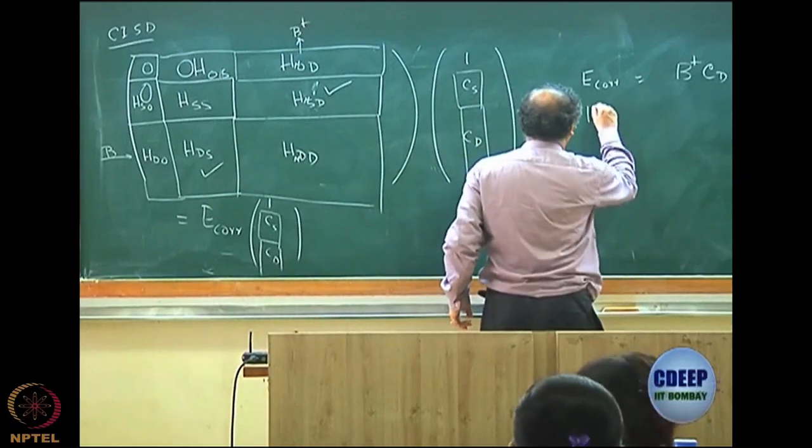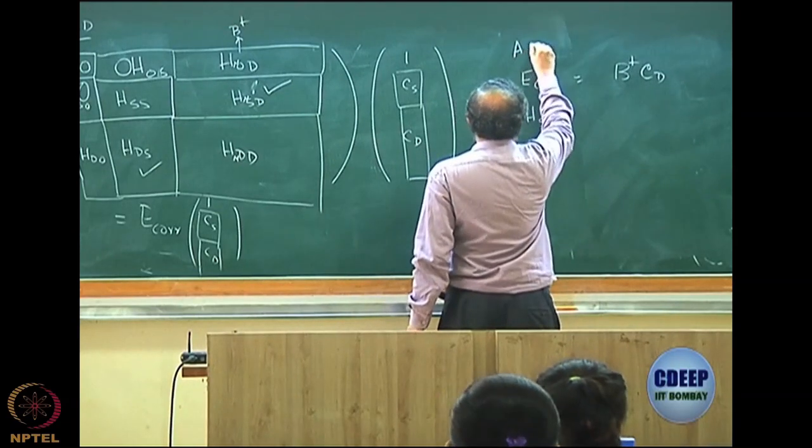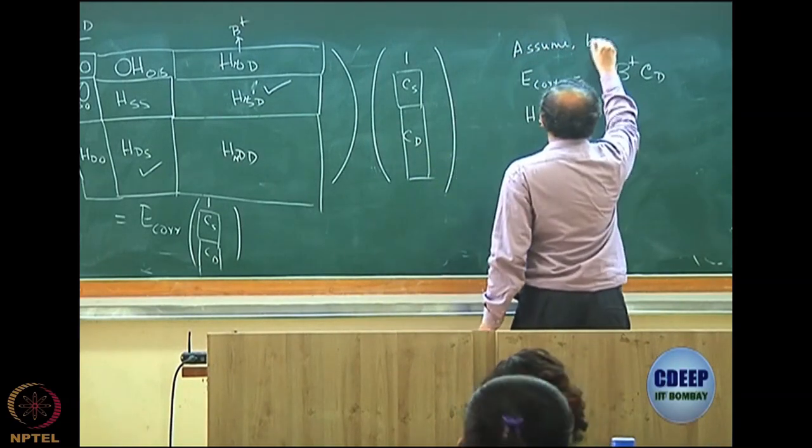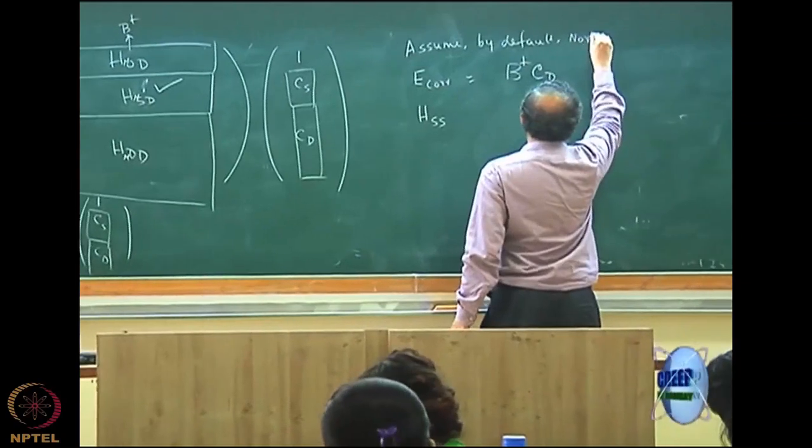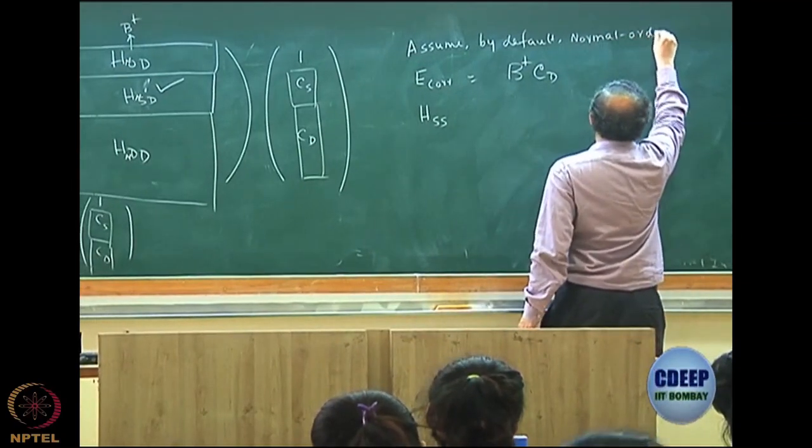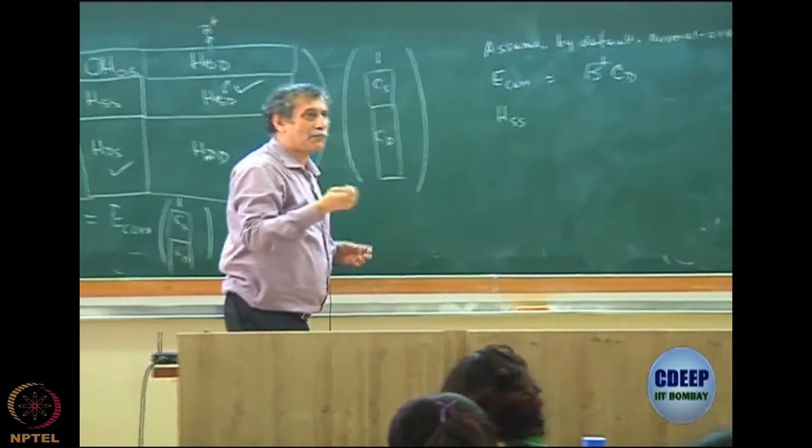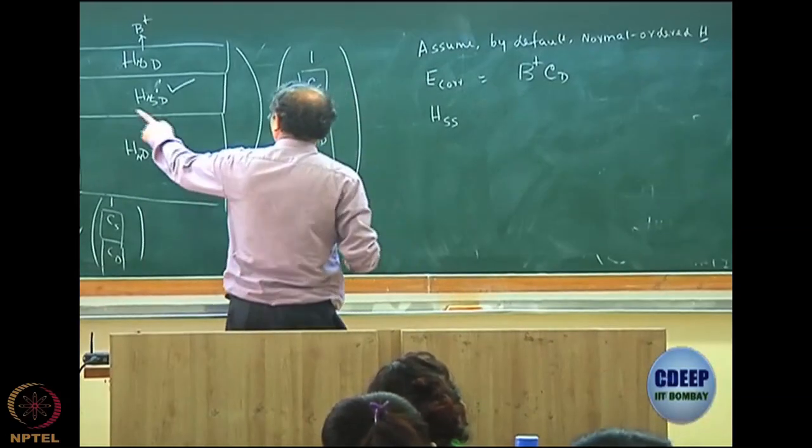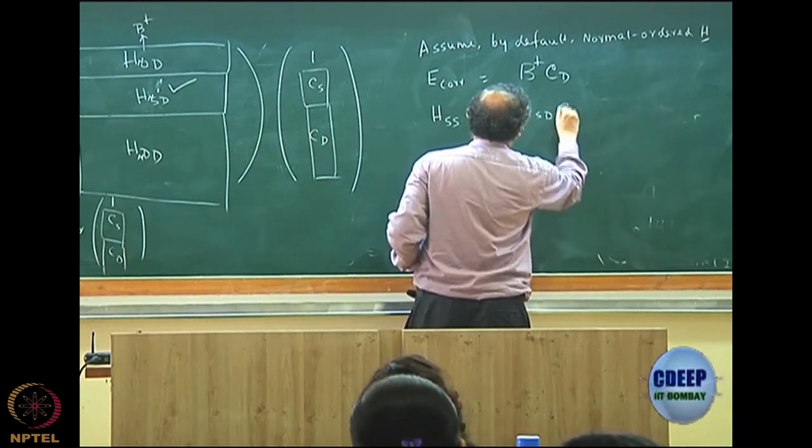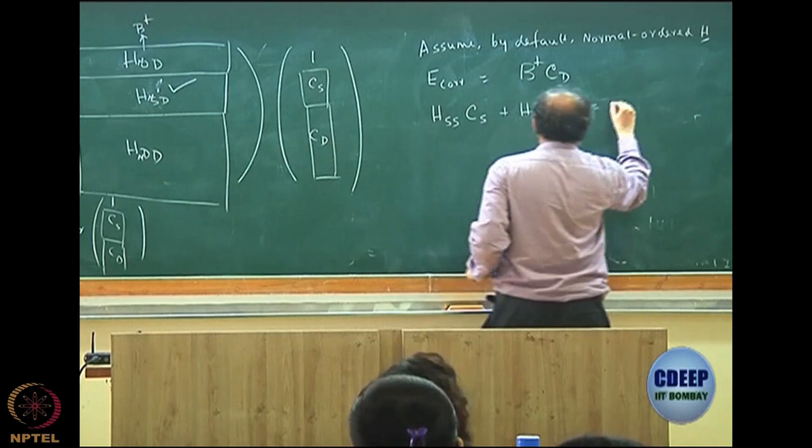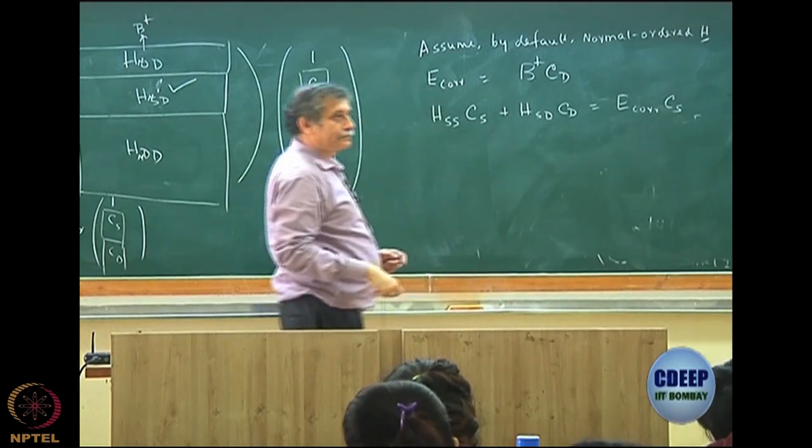You have now HSS. Again, please remember, assume by default normal Hamiltonian. So I am not going to write HN all the time. Assume by default normal order Hamiltonian. So the H that I am writing is normal order now. So you do not have to write the symbols each time. So HSS into CS plus HSD into CD equal to E correlation into CS.